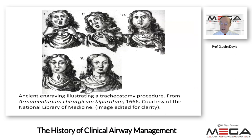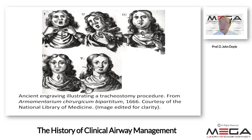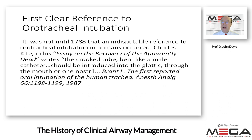Here is an ancient engraving illustrating a tracheostomy procedure from a book from 1666. You can see the patient struggling with an obstructed airway, a vertical incision being made and opened up, and then an appliance introduced through a hole in the trachea — typically between the second and third tracheal rings for classical tracheostomies, or through the cricothyroid membrane for cricothyrotomies.